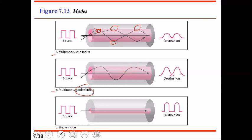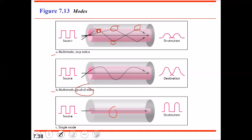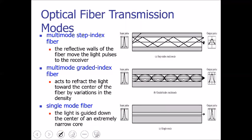In single mode propagation, the core is extremely tiny compared to multi-mode, where the core is larger. In single mode propagation the core is very small and the cladding occupies a higher region. Normally in single mode you propagate only one light ray at a time.